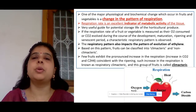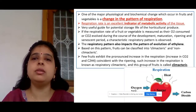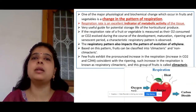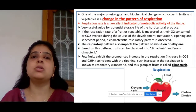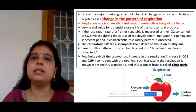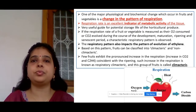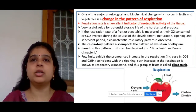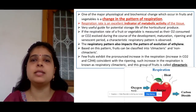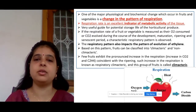Respiration is measured in terms of the respiratory quotient, which is the ratio of O2 consumed to CO2 evolved. When the respiration process is high, ethylene production is also high. Based on ethylene production, there are two types of fruits: climacteric and non-climacteric fruits.